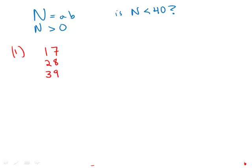So it could be one of these three numbers. Now, fortunately, all three of these numbers are less than 40. So whichever one of them it is, we know we can answer yes to the question. Yes, whatever n is, it is less than 40. So this statement by itself is sufficient.